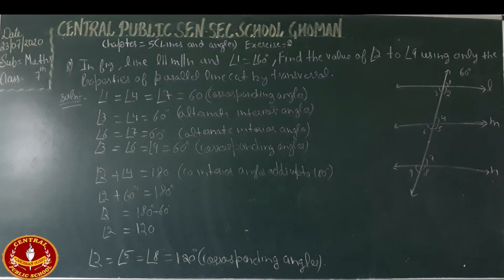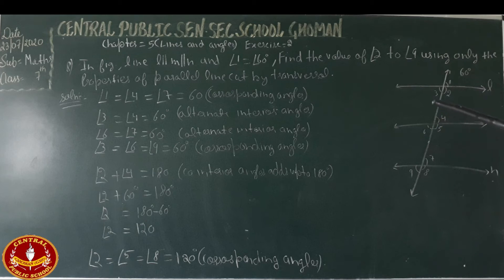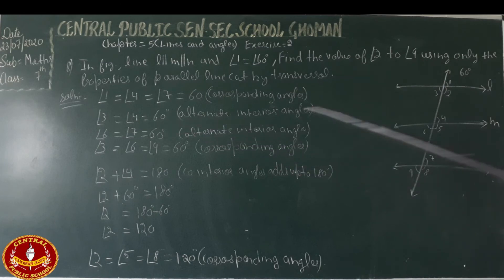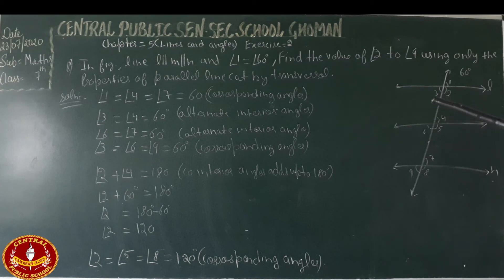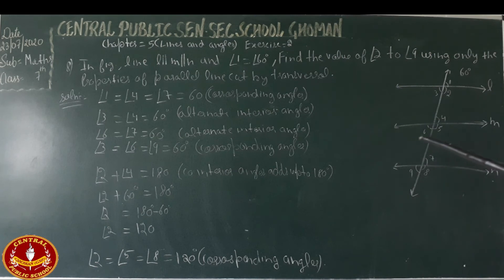Looking at angle 3: angle 3 is equal to angle 4 because they are alternate interior angles. Since angle 4 is 60 degrees, angle 3 is also 60 degrees. Similarly, angle 6 is equal to angle 7 as alternate interior angles, so angle 6 is also 60 degrees.